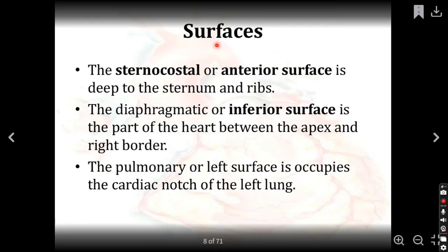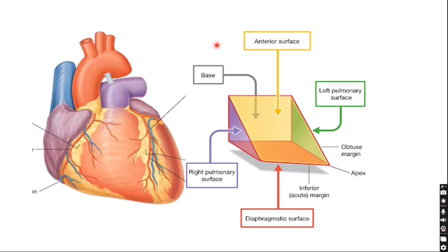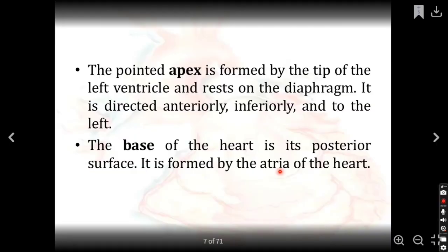Coming to the external features — first, the surfaces and borders. There are five surfaces of the heart. Looking at the diagram of the conical shape: the anterior surface is at the front, the right surface is on the right side, the left surface is on the left side, the inferior or diaphragmatic surface is at the bottom, and the pulmonary or left surface is also identified.